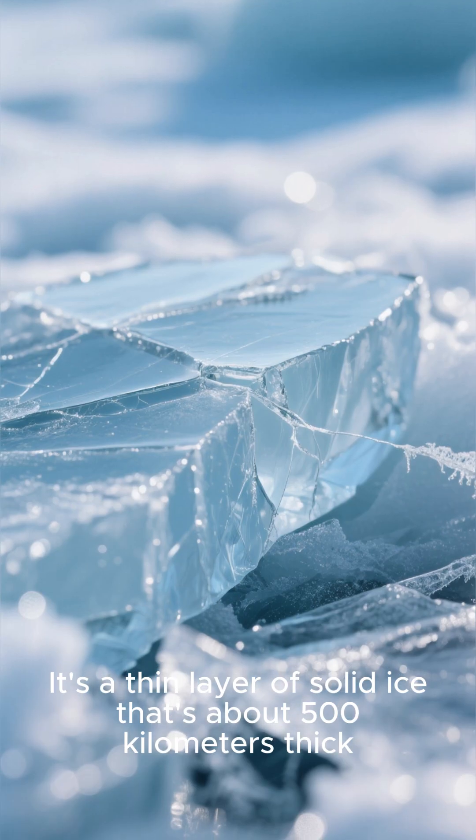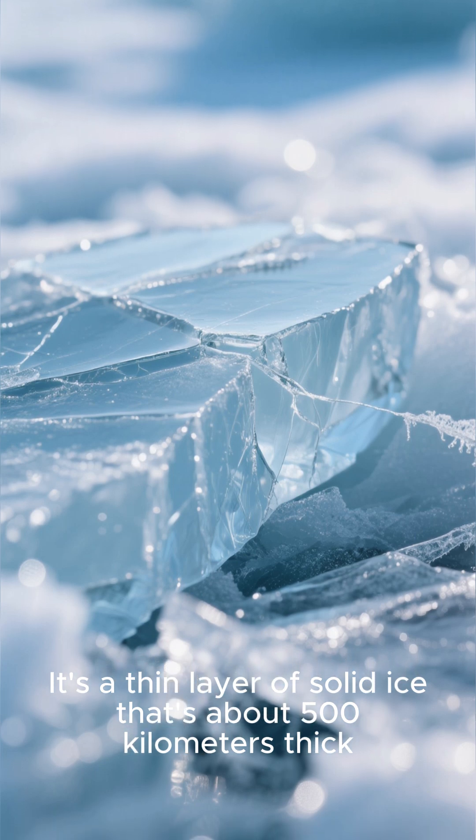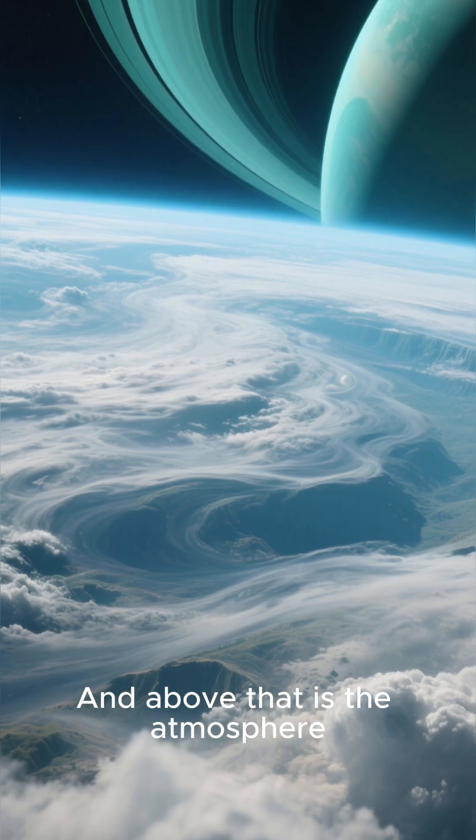Above the mantle is the crust. It's a thin layer of solid ice that's about 500 kilometers thick. And above that is the atmosphere. It's a thick layer of gas that's about 100 times as thick as Earth's atmosphere.